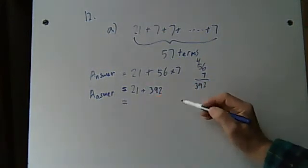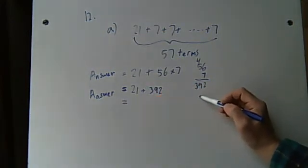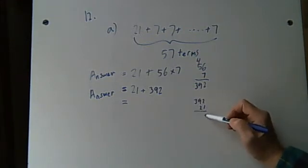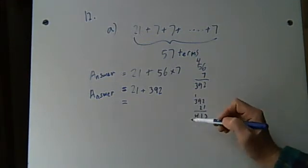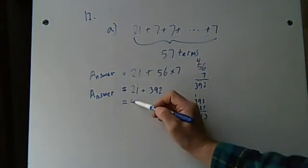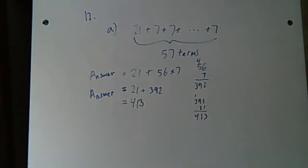And 392 plus 21, that's not a hard, a 21, that's 3, 1, 1, 413. That's what I got. Okay, so A, the answer is 413.